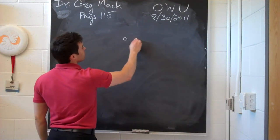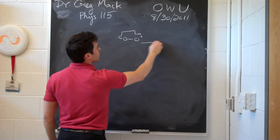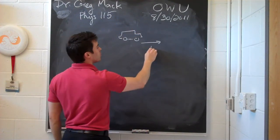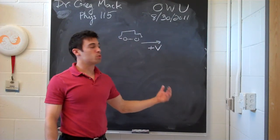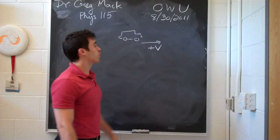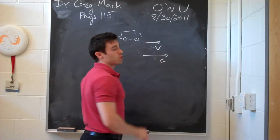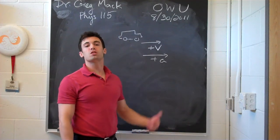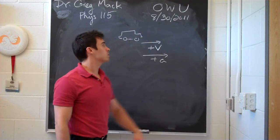and say a car were going in this direction with a certain velocity, we'll call it plus v, and you put your foot on the gas pedal to make it go faster, then you'd be applying an acceleration in the same direction, which would make it speed up, increase the speed, cover more distance for the displacement.